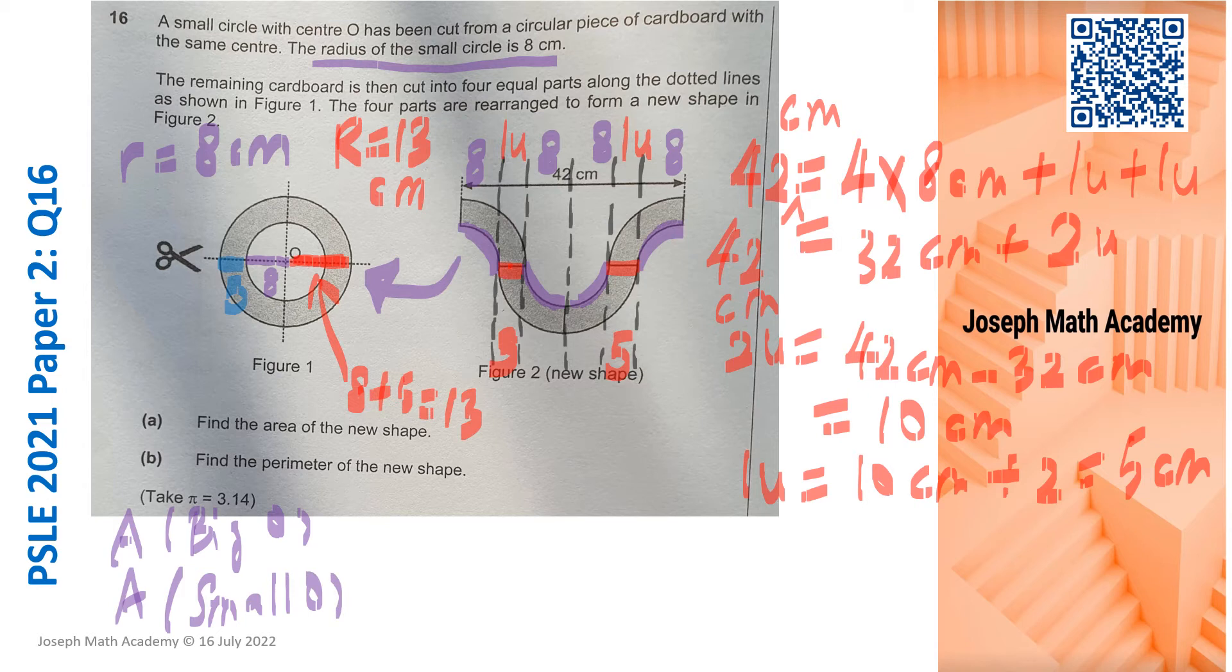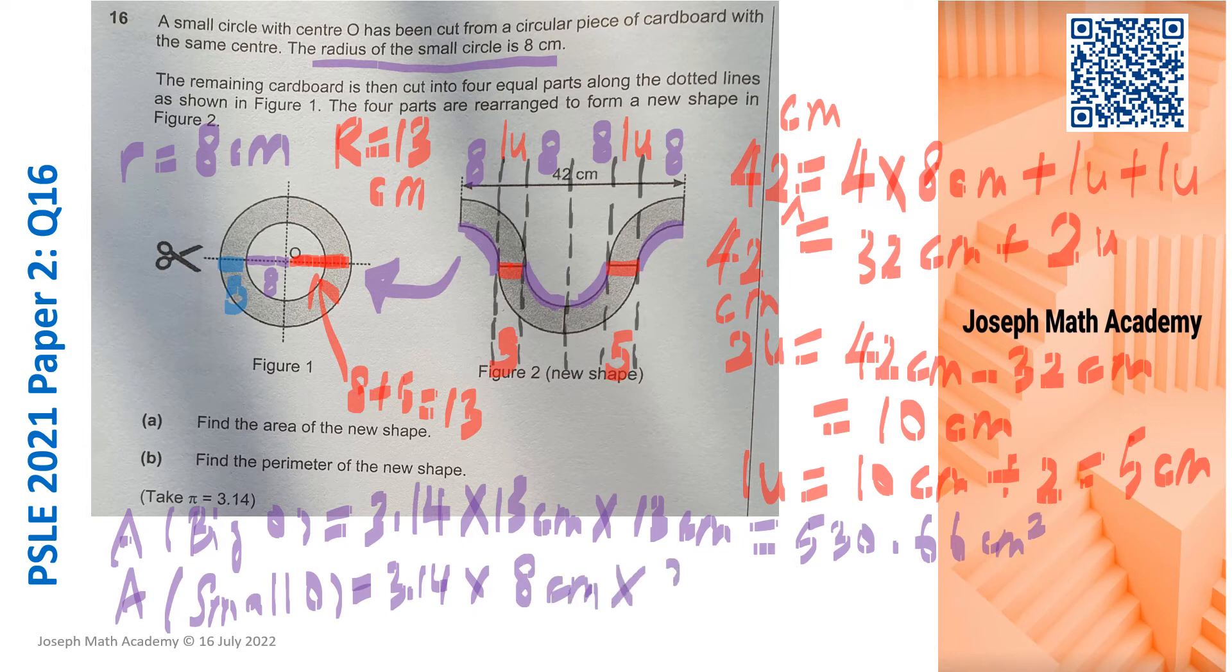Let's solve. So let's find the area of the big circle. The area of the big circle is simply 3.14 times 13cm times 13cm. So pi times 13 times 13 will give me 530.66 square cm.